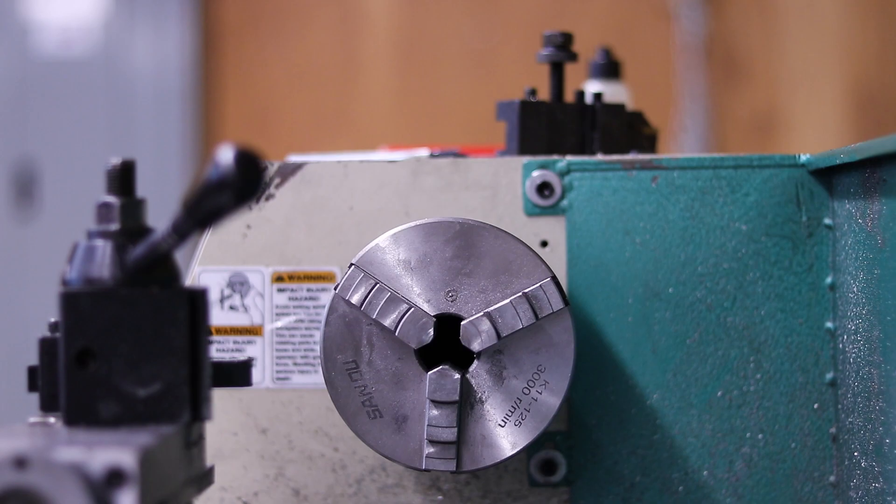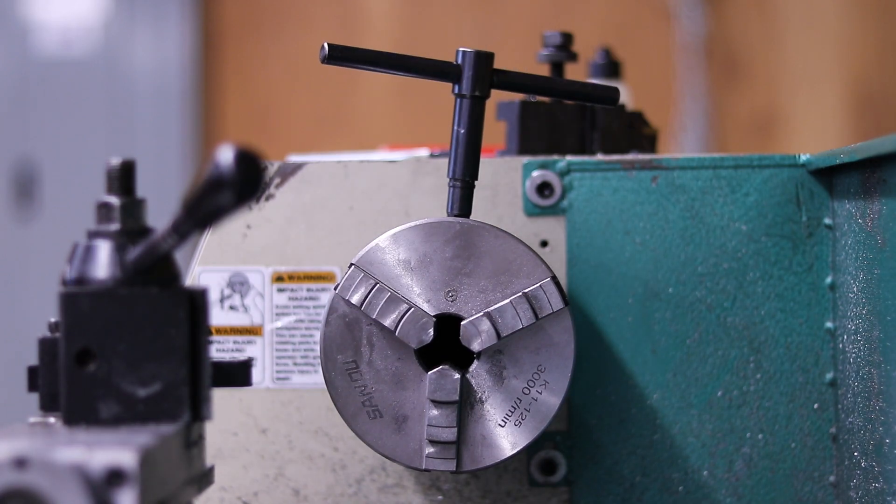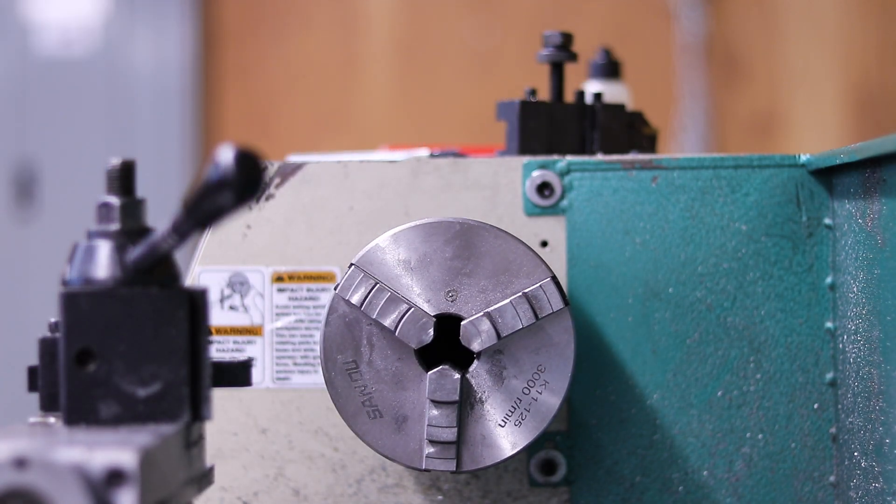As you should remember from the safety presentation, chuck keys are the most common source of injury on a lathe. Failure to remove them before starting the lathe will result in it being thrown at the operator or across the room. Never leave a chuck key sitting in the chuck. If you see someone else making this mistake, kindly just remove it for them.